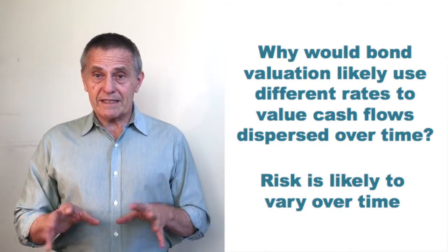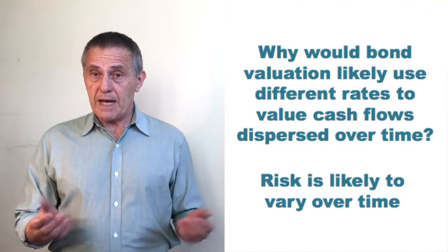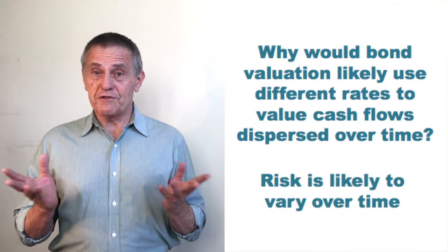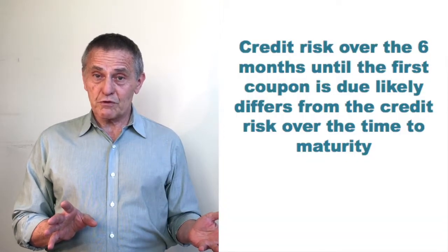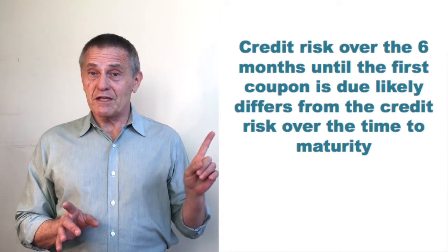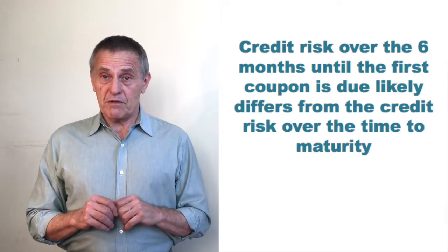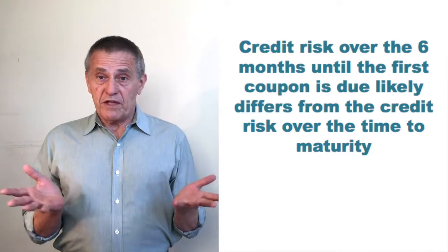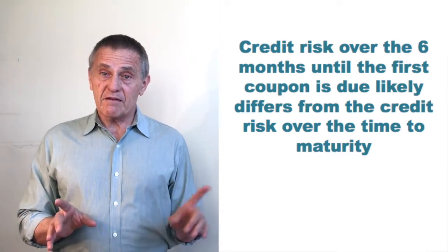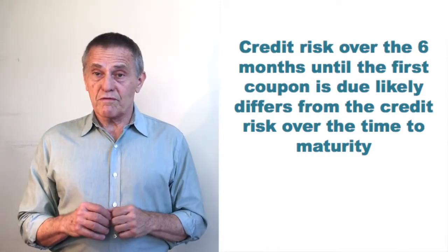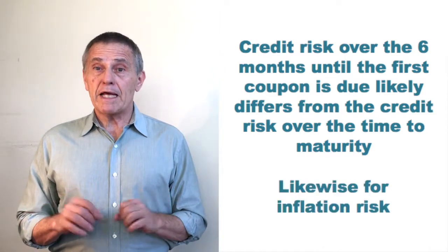And think about the implications of that. Think about the various risks that need to be reflected in the value of a bond. For instance, credit risk is a big issue for at least bonds of most issuers in the fixed income markets. Can anyone reasonably make the case that the credit risk over the 6 months due date of the first coupon would be the same as the credit risk over the 10 years until the final coupon would be the same as the inflation risk over the 10 years to maturity? Clearly, an impossible case to make.